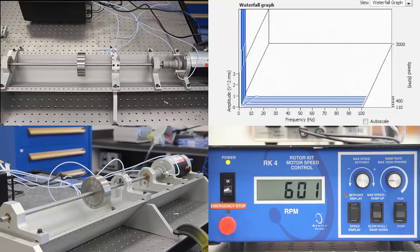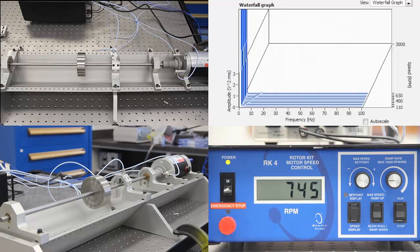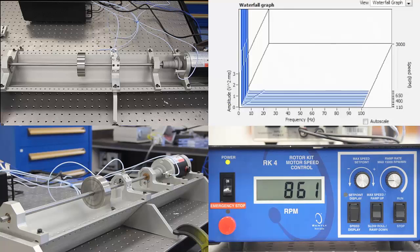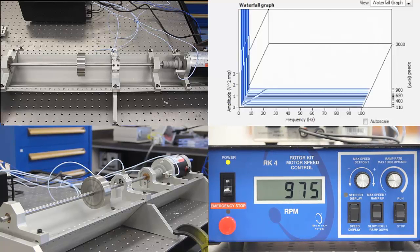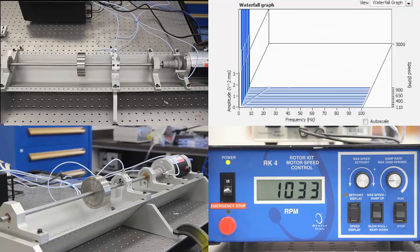In this experiment the motor will drive the shaft from 100 RPM to 3000 RPM gradually, and after reaching 3000 RPM the motor speed will gradually slow down to 100 RPM. This emulates the starting up and shutting down of rotating machinery.